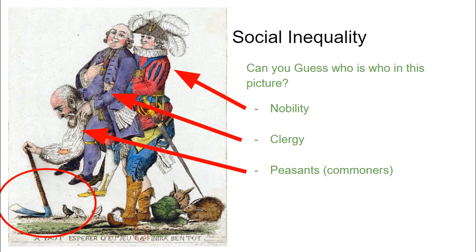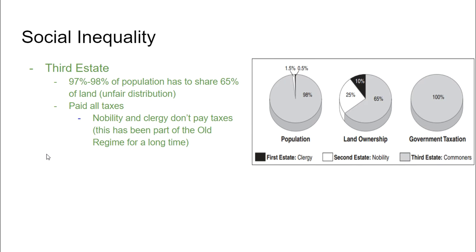The third estate, if you look at these graphs, was roughly 97 to 98% of the population depending on the historian you ask. That majority has to share 65% of their land. You can see the third estate is this gray area — they're 98% of the population. When it comes to land ownership, this 98% is sharing 65%, while this little 2 to 3% is sharing 35% of the land.